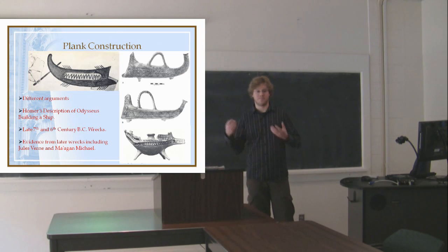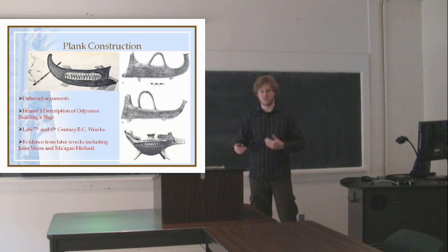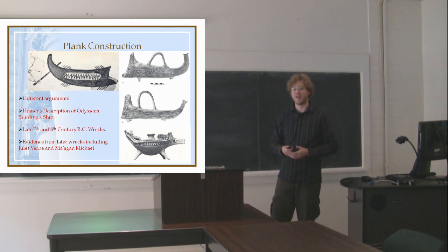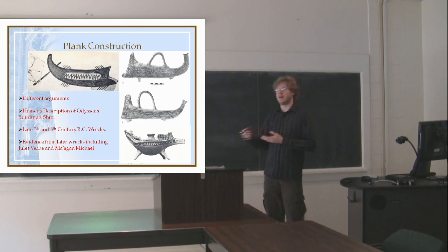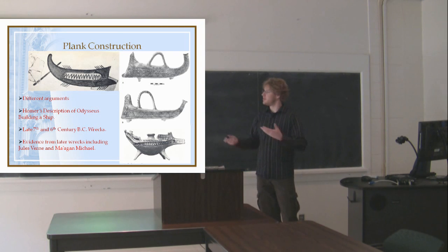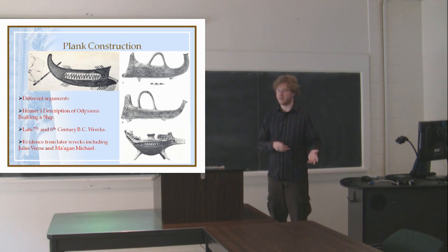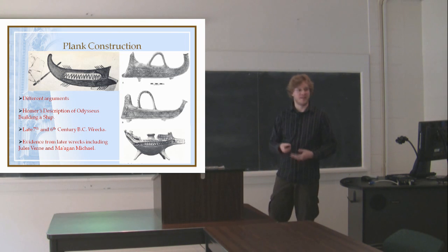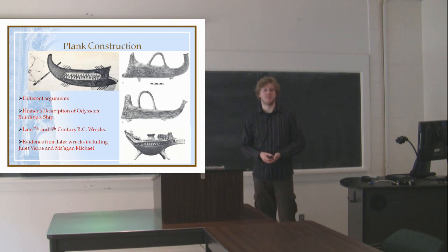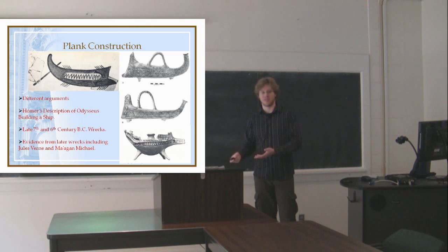Ultimately, pentacontremes show up somewhere around the 12th century and continue until about the 6th century, when they are replaced by triremes. Now that we've established when and how these ships were used, the next question is: how were they made?